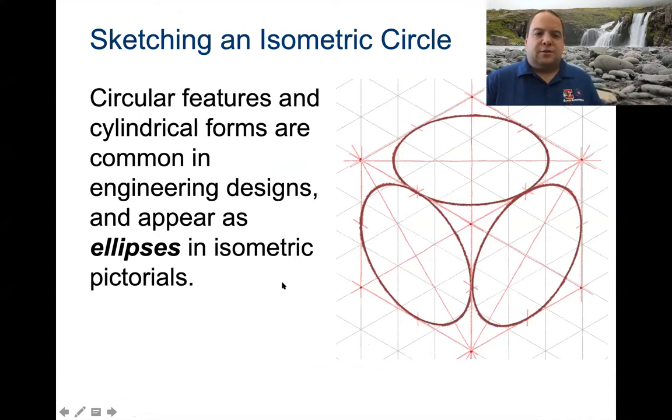Circular features and cylindrical forms are commonly known in engineering designs and appear as ellipses in isometric pictorials. You cannot grab a soda can or a quarter and trace it in an isometric. What we end up drawing is an ellipse, and that ellipse is an optical illusion that makes it look like a circle after we darken everything in. So we have to draw an ellipse. There's a certain process, certain steps that you have to follow along when you're drawing these types of shapes. Let's take a look at the process.